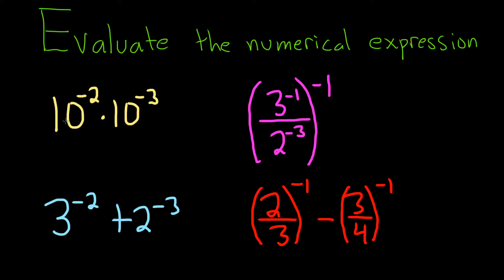The first one is 10 to the negative 2 times 10 to the negative 3. So because the bases are the same, the 10s are the same, we can just add the exponents right away. So this is 10 to the negative 5, because negative 2 plus negative 3 is negative 5.